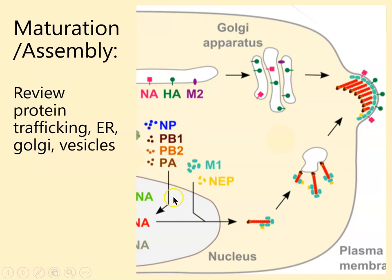That was all part of biosynthesis — cap snatching, transcription, translation, and RNA copying. Now we look at maturation and assembly. There are two pathways happening here.